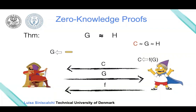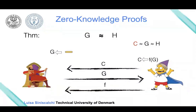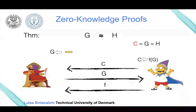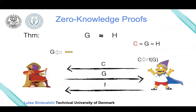Now we are introducing our third property: zero-knowledge. How can we more formally talk about this property? How can we capture the idea that this protocol is not leaking any information about the witness—the permutation in this specific case?